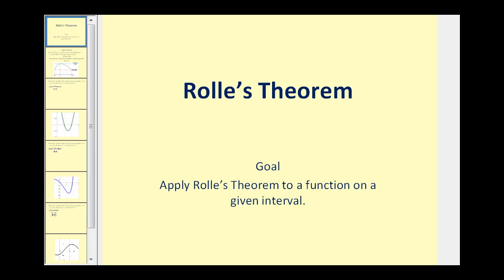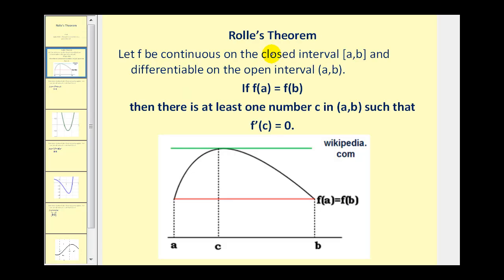Welcome to a lesson on Rolle's Theorem. Let's take a look at what Rolle's Theorem states. Let the function f be continuous on the closed interval from a to b and differentiable on the open interval from a to b. If f of a equals f of b, then there is at least one number c in the open interval from a to b such that f prime of c is equal to zero.